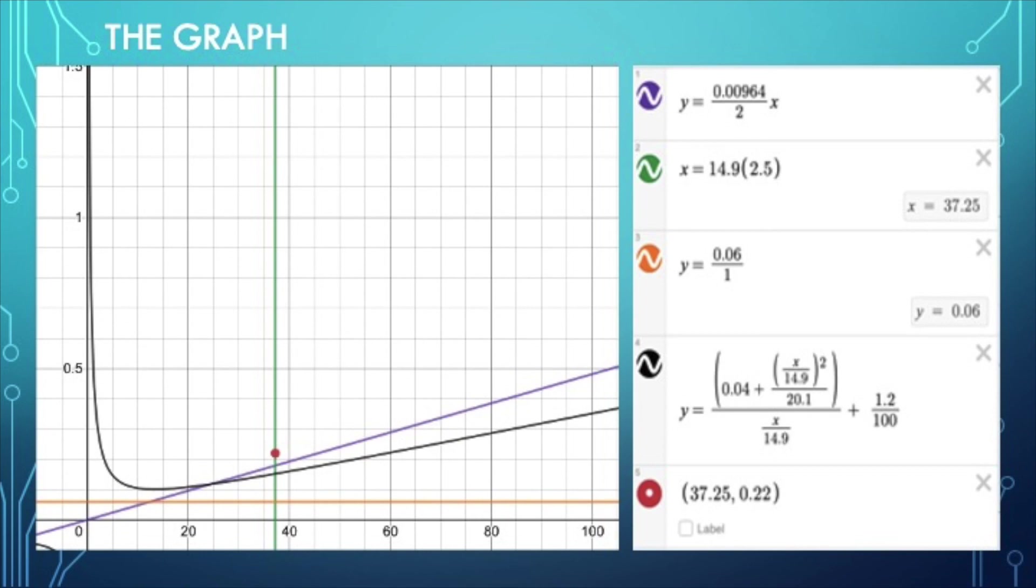We should also mention that the reason why we don't choose a higher point on the graph is because it's true that we're going to have a higher thrust-to-weight ratio, but that in turn is going to increase our power rating which means we're going to have to pay more for the engine. And this brings us to the most optimum point which is going to be 37.25 pounds per feet squared for wing loading and 0.22 for thrust-to-weight ratio which is a dimensionless quantity.